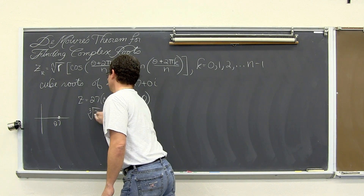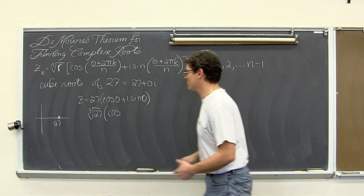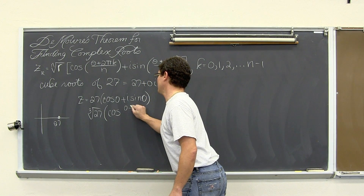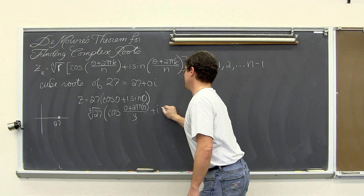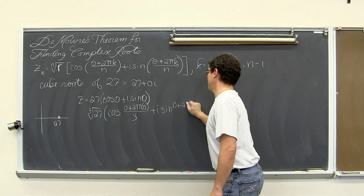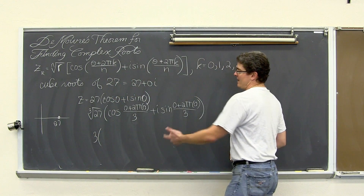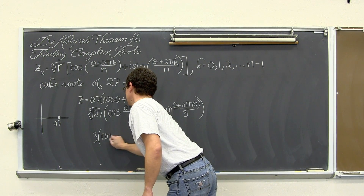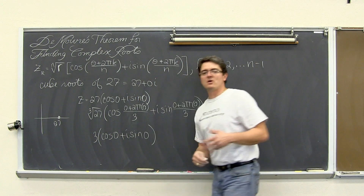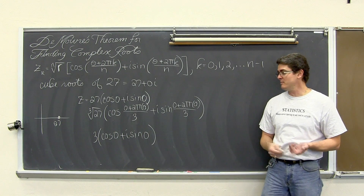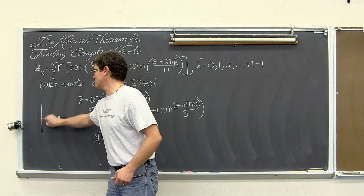Now we are going to find all the cube roots of that complex number in polar form using radians. That is going to be the cube root of 27 times cosine of 0 plus 2pi times 0 over 3. The cube root of 27 is 3, and 0 divided by 3 is still 0. So cosine of 0 plus i sine of 0 — this is the real cube root of 27, because we still have angle measures of 0, so we are still on the real axis.